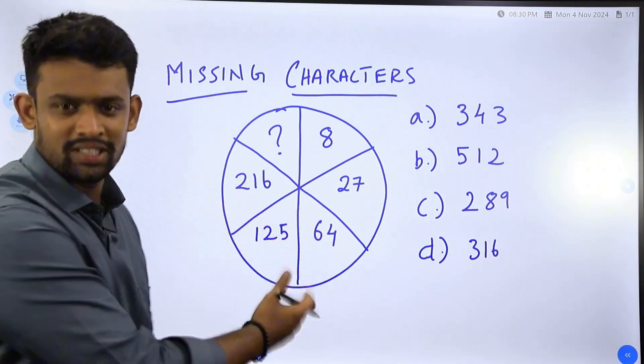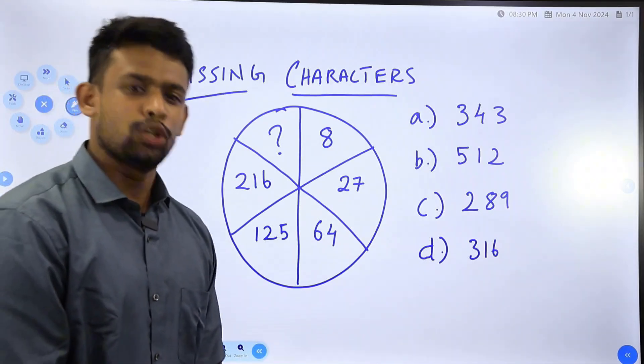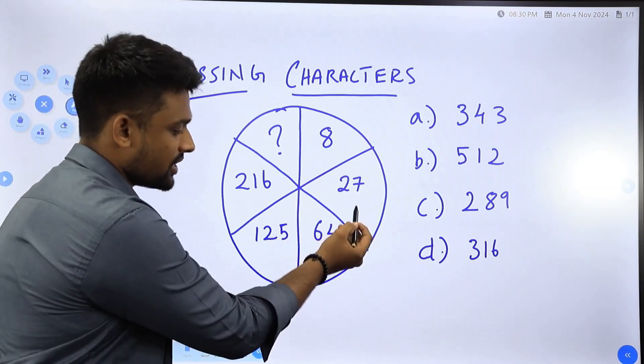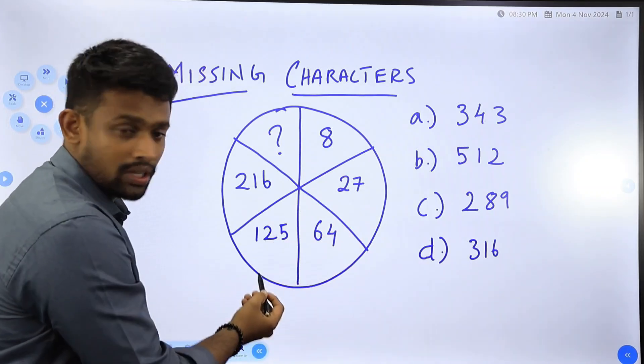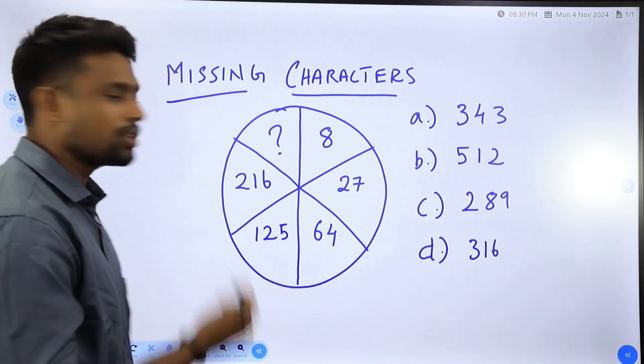What is the answer for this missing character question? If you are thorough with cube numbers, you can see that the sequence is 8, 27, 64, 125, and 216. A candidate who knows cube numbers...